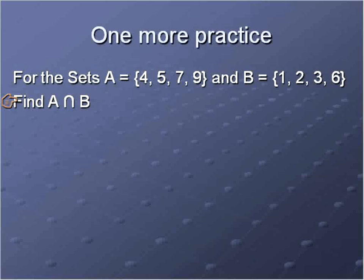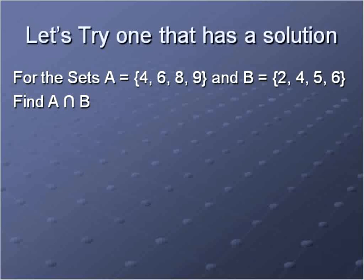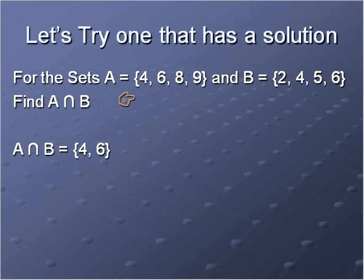For the intersection of A and B: set A = {4, 5, 7, 9} and set B = {1, 2, 3, 6}. We're finding numbers that are in both sets. In this case, there are no numbers in both A and B — that's the empty set, written as a nil symbol. There's no real solution. Let's do one that has a solution, so I'll change the numbers. With A = {4, 6, 8, 9} and B = {2, 4, 5, 6}, the numbers in both sets are 4 and 6. So the intersection of A and B is {4, 6}.